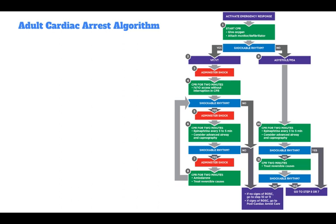You'll assess the rhythm again. If it's still a shockable rhythm, administer the shock. If it's not, continue with CPR, and then in about two minutes check if the rhythm is shockable again. If no signs of ROSC, go to step 10 or 11; if signs of ROSC, go to post-cardiac arrest care. If there was no shockable rhythm to begin with, it's either asystole or PEA — you're not going to shock. Perform CPR for two minutes with epinephrine every three to five minutes. Consider an advanced airway and capnography, and treat reversible causes if possible.